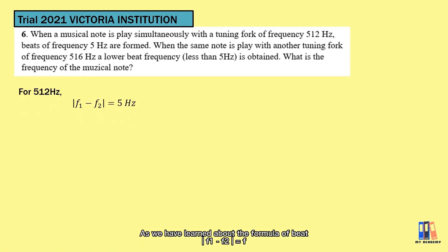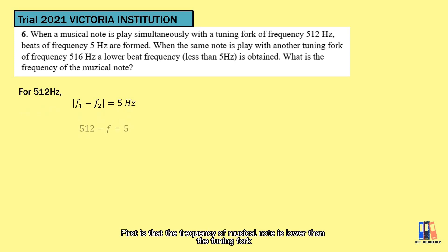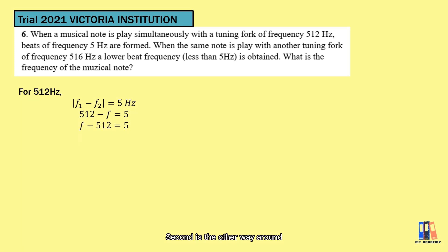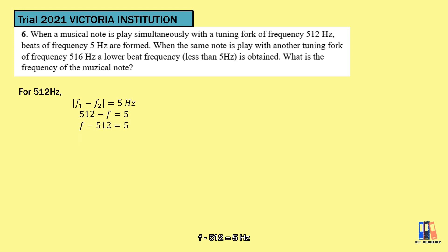Using the beat formula, there are two possibilities. First, the frequency of the musical note is lower than the tuning fork: 512 minus f equals 5 Hz. Second, the frequency of the musical note is higher: f minus 512 equals 5 Hz.